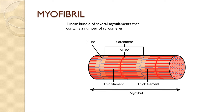Myofibrils are the linear bundle of several myofilaments that contain a number of sarcomeres. Muscle fiber contains many myofibrils, and when we take a portion of these myofibrils we can see it is made up of interesting structures known as thick and thin filaments, as shown in the picture.